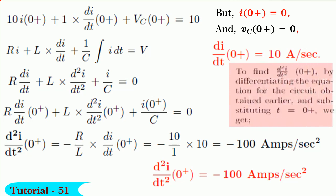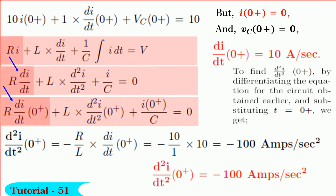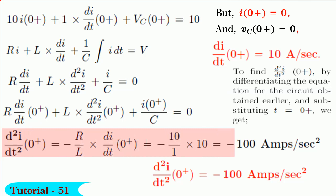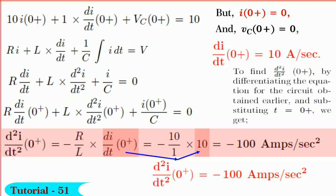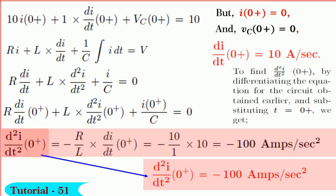To find d²i/dt²(0+), by differentiating the circuit equation and substituting t equals 0 plus, we get R·di/dt(0+) plus d²i/dt²(0+) plus i(0+)/C equals 0. Substituting R equals 10 ohm, L equals 1 Henry, di/dt(0+) equals 10, and i(0+) equals 0, and solving, we get d²i/dt²(0+) equals minus 100 amperes per second squared.